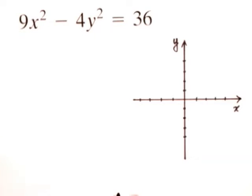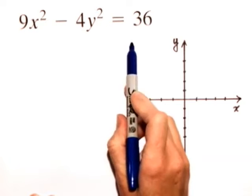Let's graph the following conic section. For a hyperbola, we'll list the foci and we'll also name the asymptotes. We have 9x squared minus 4y squared equals 36.